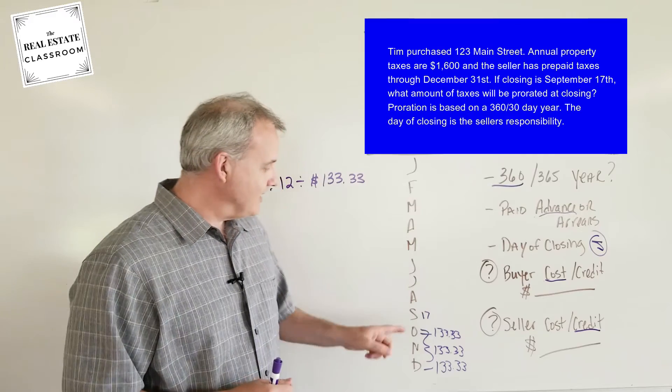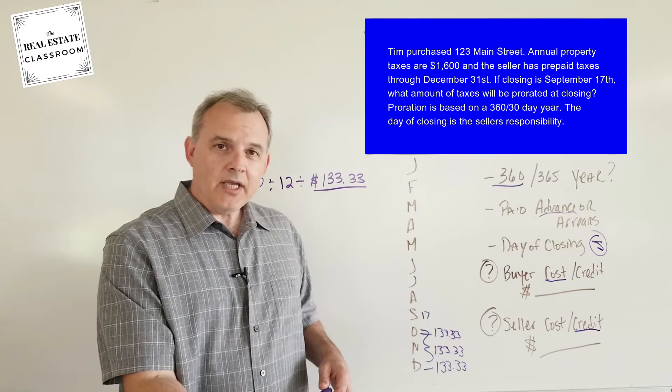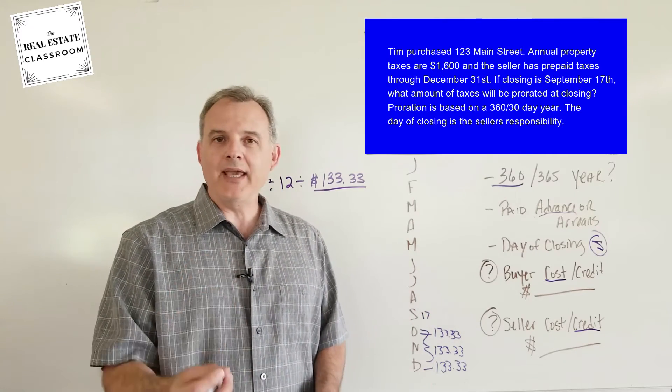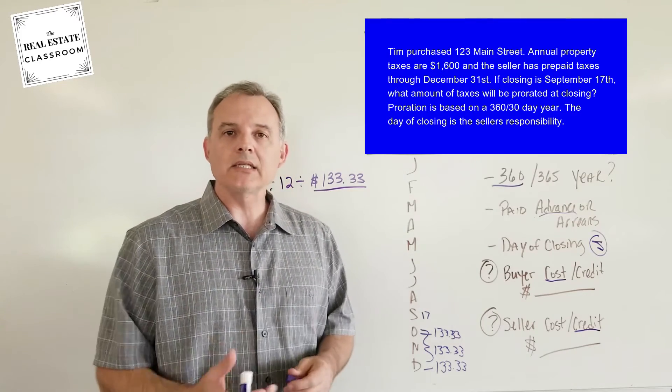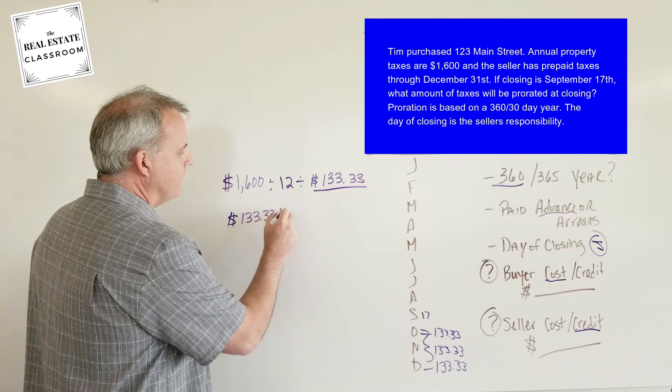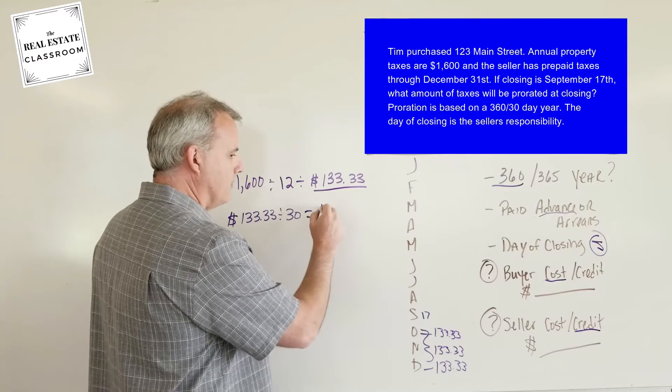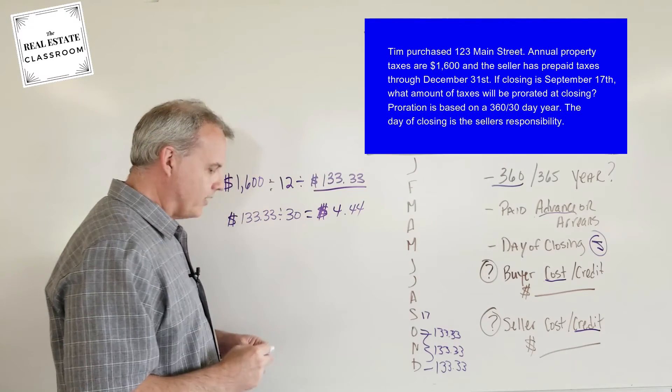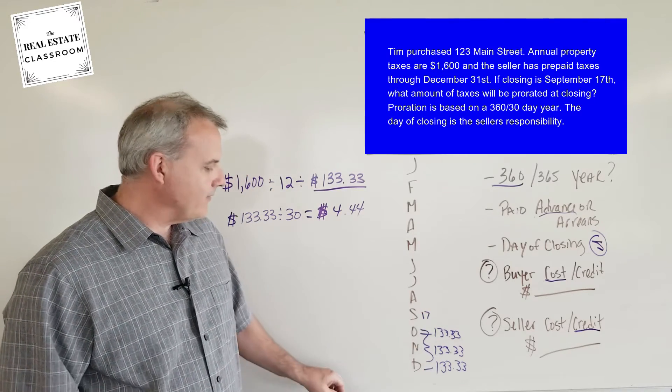We also know the closing is the 17th of September, so we're going to have to break that down into per diem. We know that the closing's on the 17th, so there's going to be a certain number of days that the buyer is going to have to reimburse the seller for, but we can't do it by just using the monthly rate, because we would overpay the seller. So we have to break this down into per diem. So, we're going to take $133.33, and we're going to divide it by 30, which represents 30 days in our month. And when we do that, that gives us a total amount of $4.44.